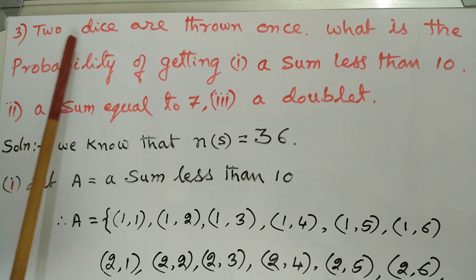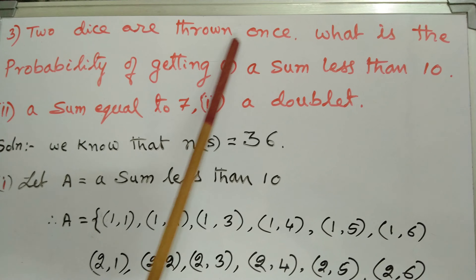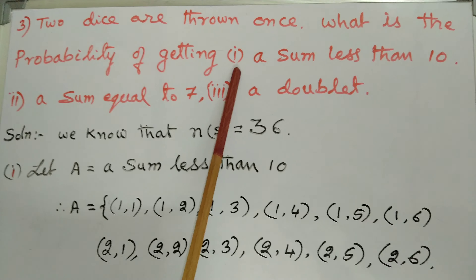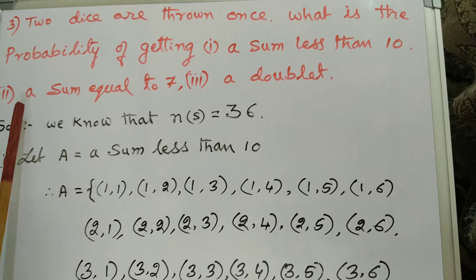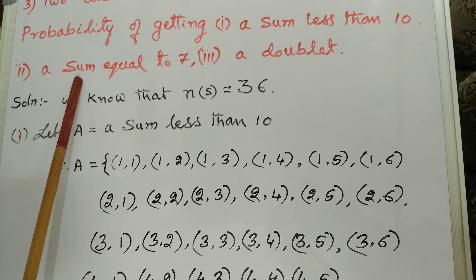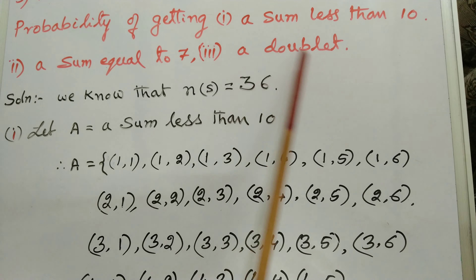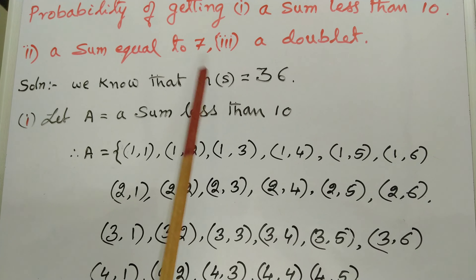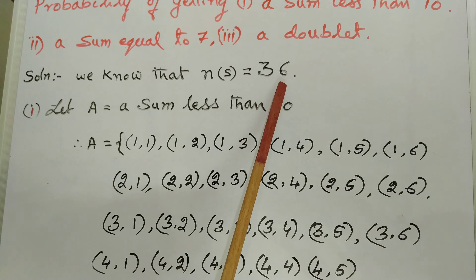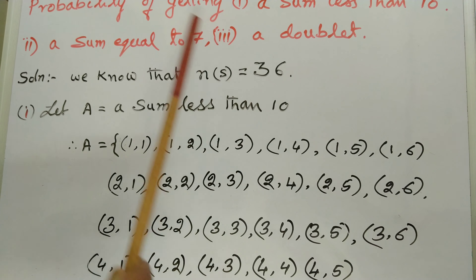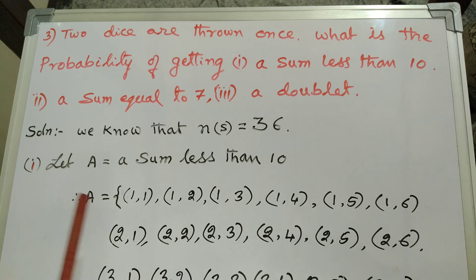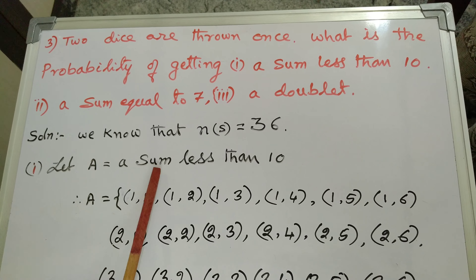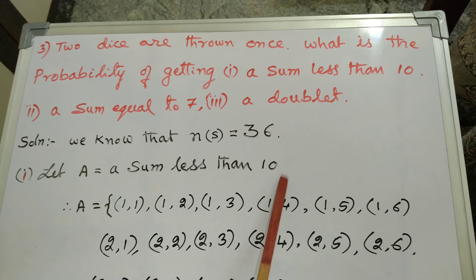Third problem: two dice are thrown once. What is the probability of getting — number 1: a sum less than 10; second: a sum equal to 7; third: a doublet? We know that n(S) = 36 because we are throwing two dice. Now, first event: let A be the event — a sum less than 10.